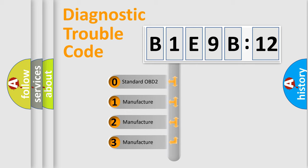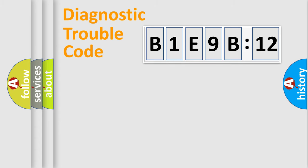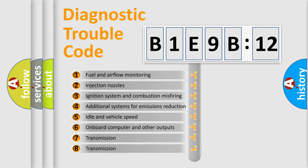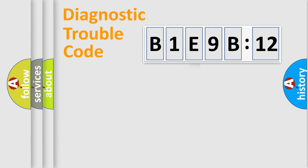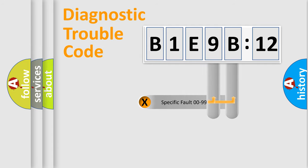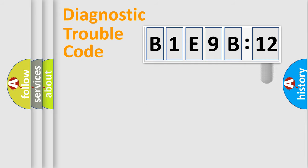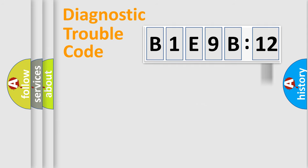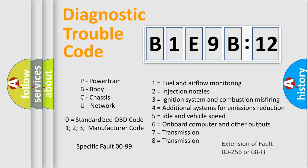If the second character is expressed as zero, it is a standardized error. In the case of numbers 1, 2, or 3, it is a more specific expression of the car-specific error. The third character specifies a subset of errors. This distribution is valid only for the standardized DTC code. Only the last two characters define the specific fault of the group. The add-on to the error code serves to specify the status in more detail — for example, a short to ground. Note that such a division is valid only if the second character is expressed by the number zero.